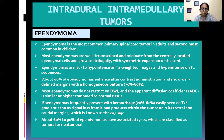Ependymomas frequently present with hemorrhage in 20 to 60% of cases, easily seen on T2 star gradient echo as signal loss from blood products within the tumor or in its rostral and caudal margins, known as the cap sign. About 60 to 90% of ependymomas have associated cysts, which can be classified as tumoral or non-tumoral cysts.